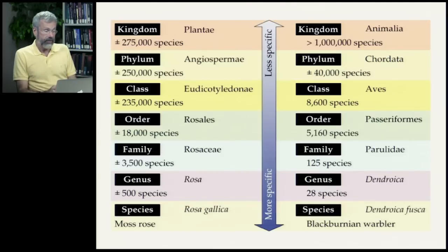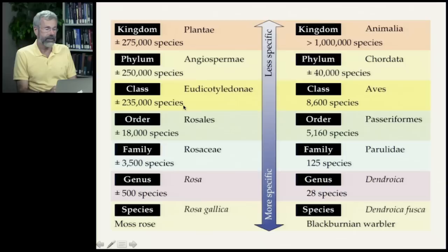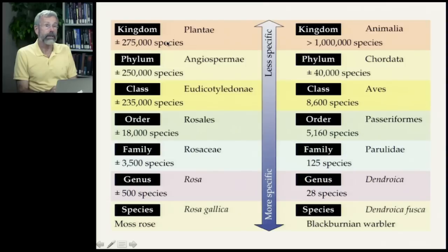The plural of genus is genera. Rosa is one genus that belongs in the family Rosaceae, which has altogether 3,500 species. The family Rosaceae belongs with some other families in the order Rosales, which is 18,000 species. These various orders belong in Eudicotyledons, which is a class of plants with 235,000 species. Several classes of plants belong in the phylum Angiosperm, of which there are 250,000 species. We go all the way up to the plant kingdom, which contains all the plants in the world — 275,000 different species.